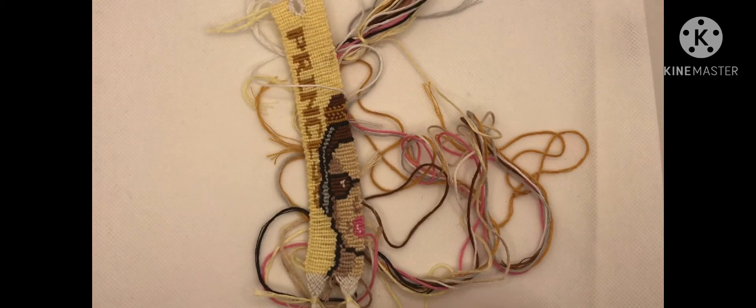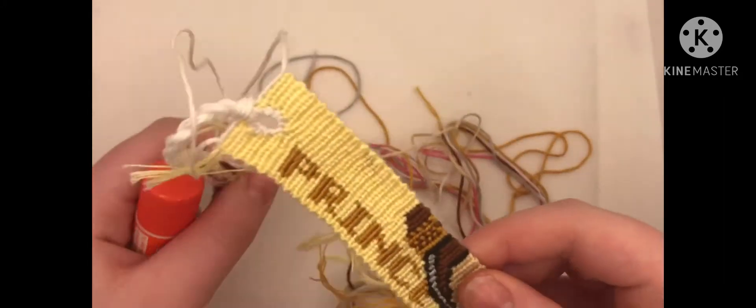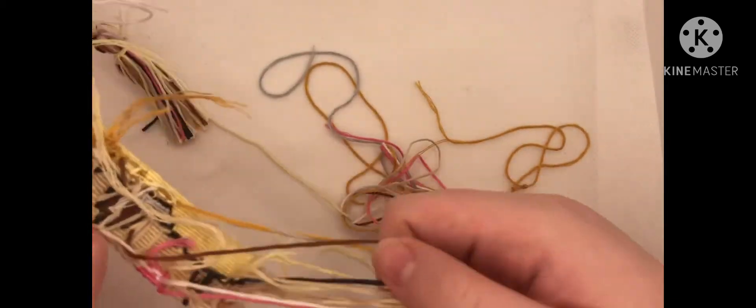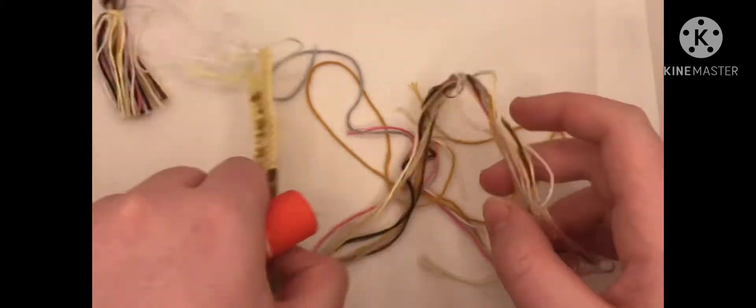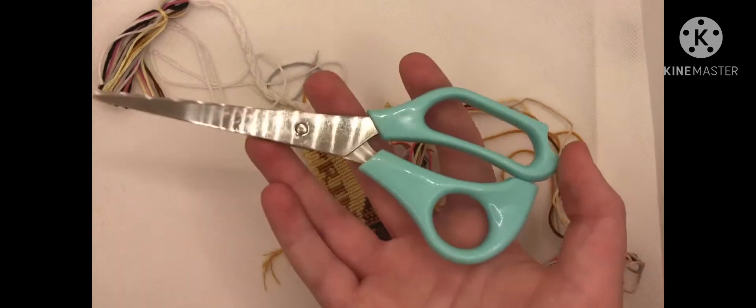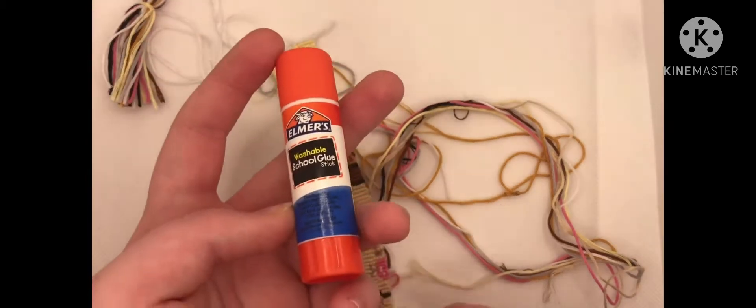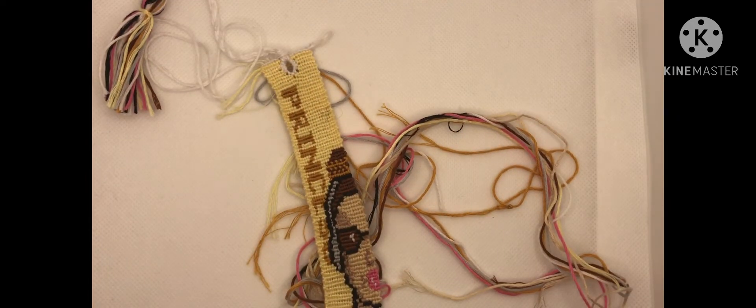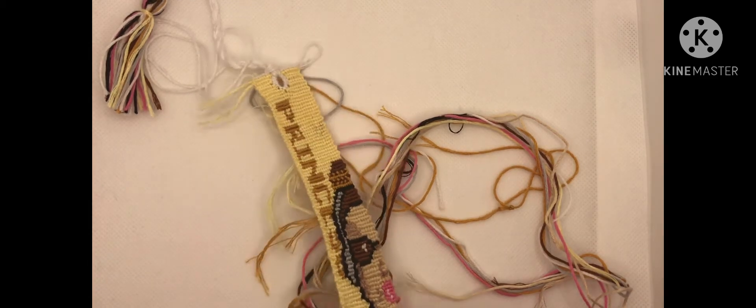So what you need for this tutorial is an alpha bracelet with all of the strings that are sticking out, scissors, and optional glue stick or some glue. If you're worried about your string fraying, you can just glue the ends a bit. I like to rub some on there so they don't fray.